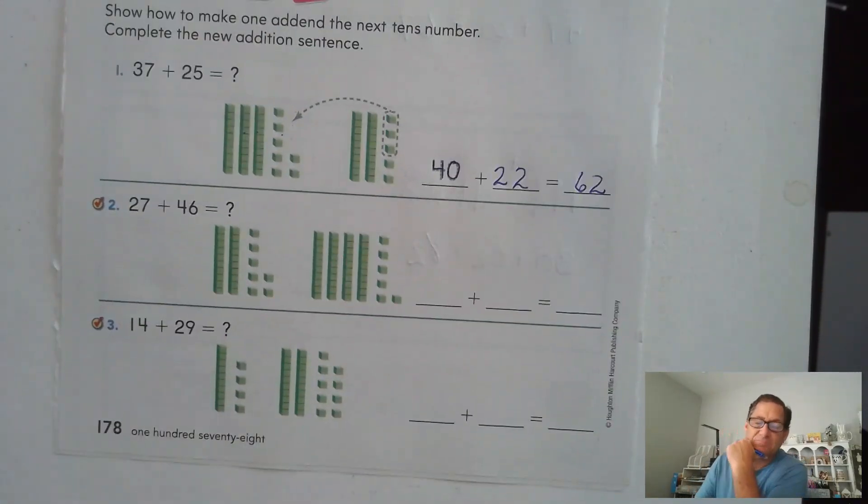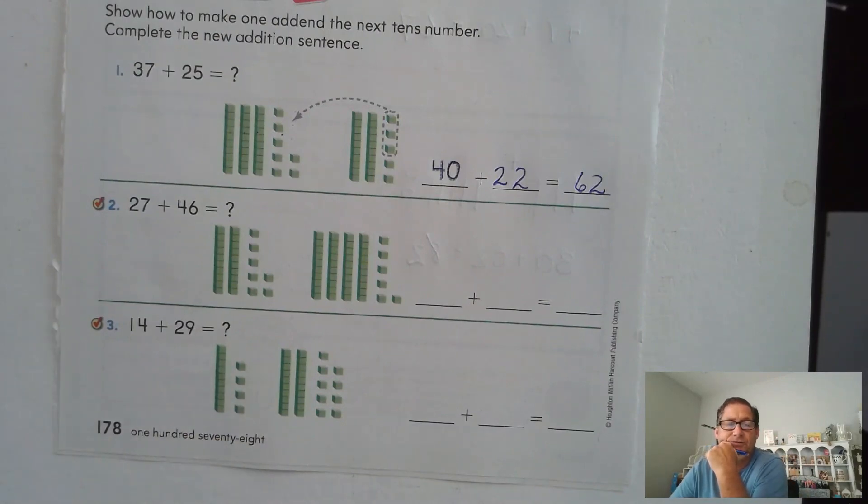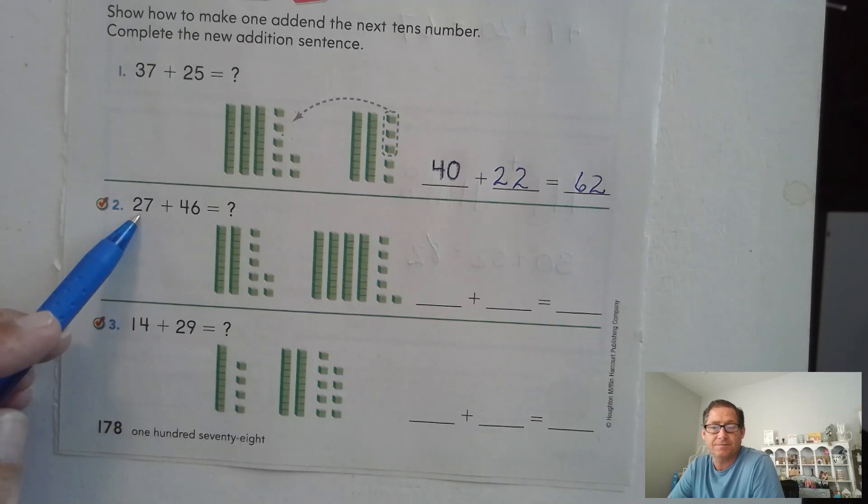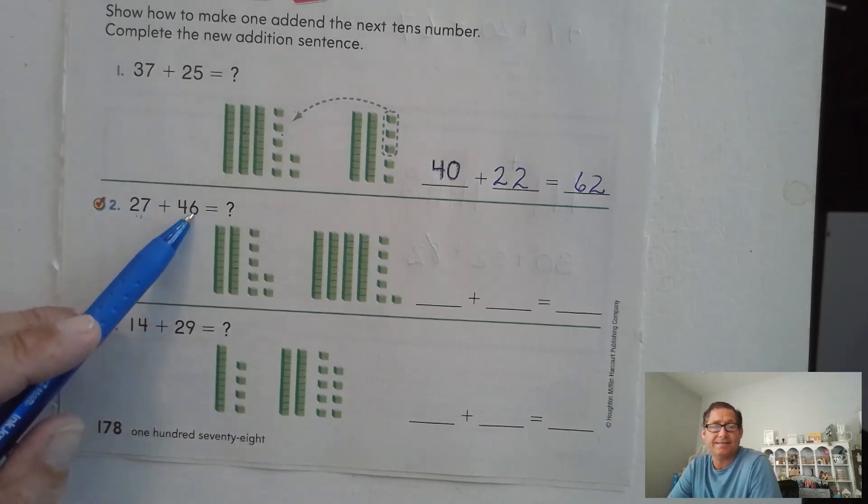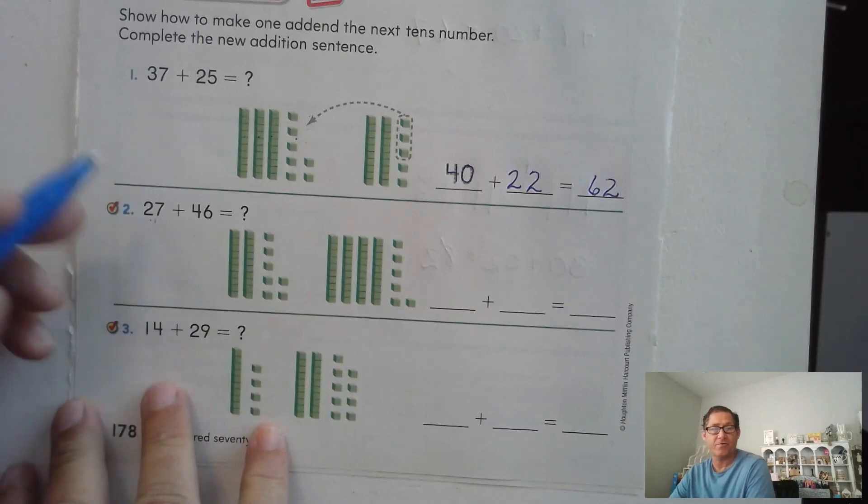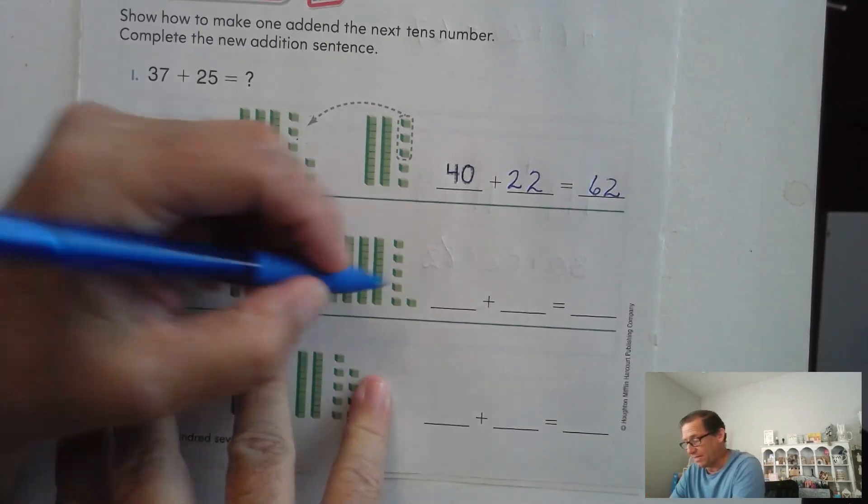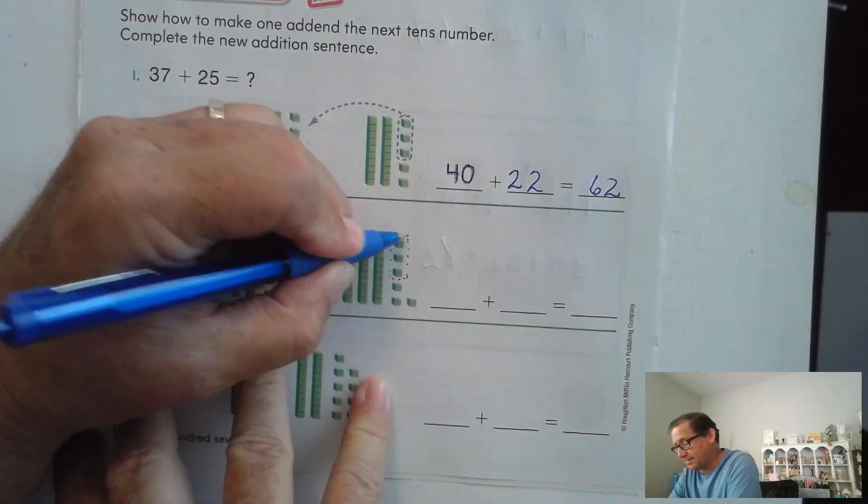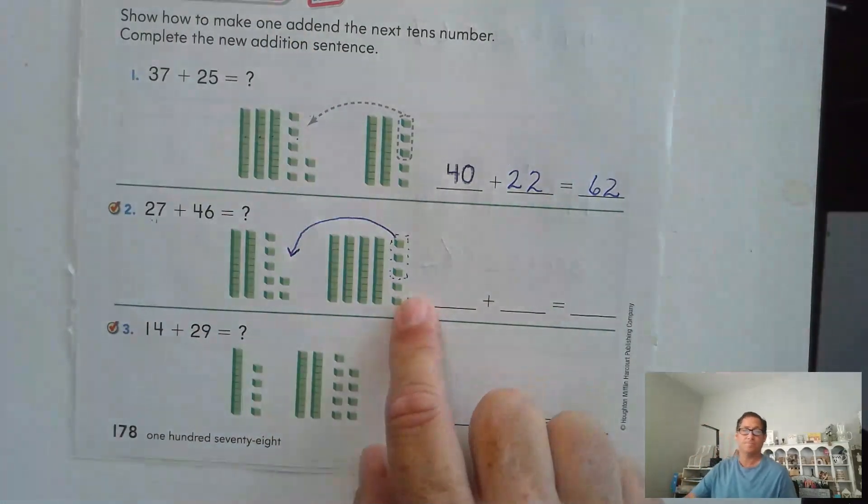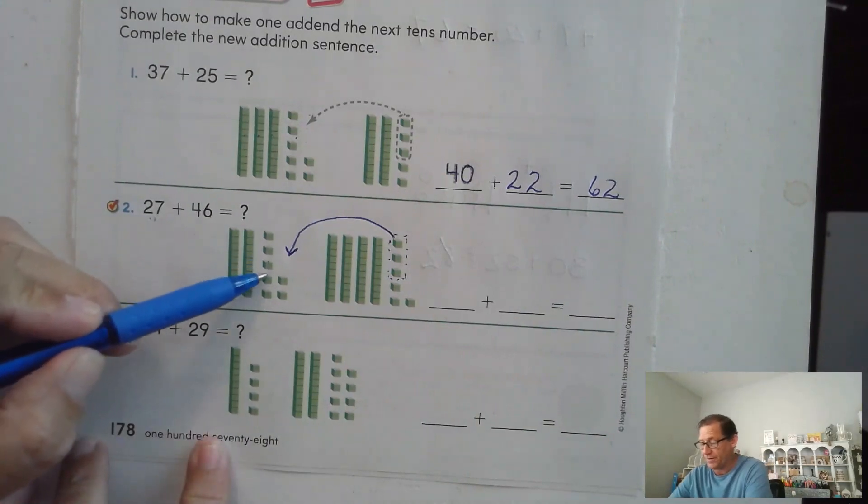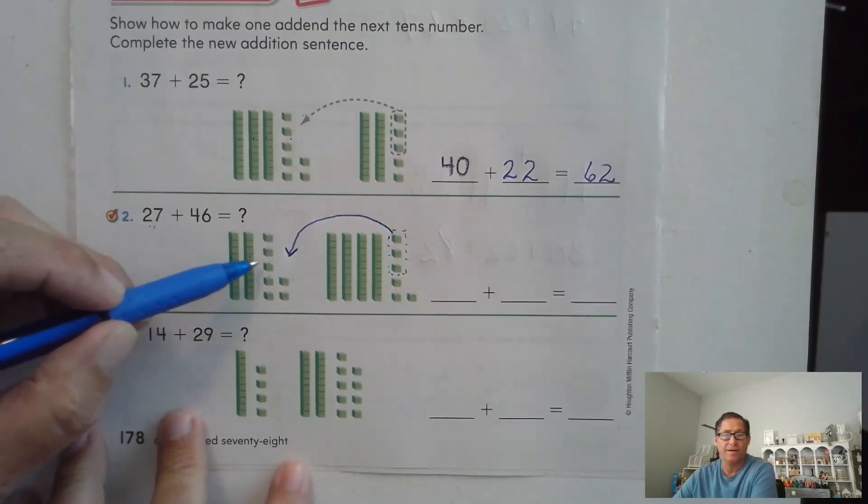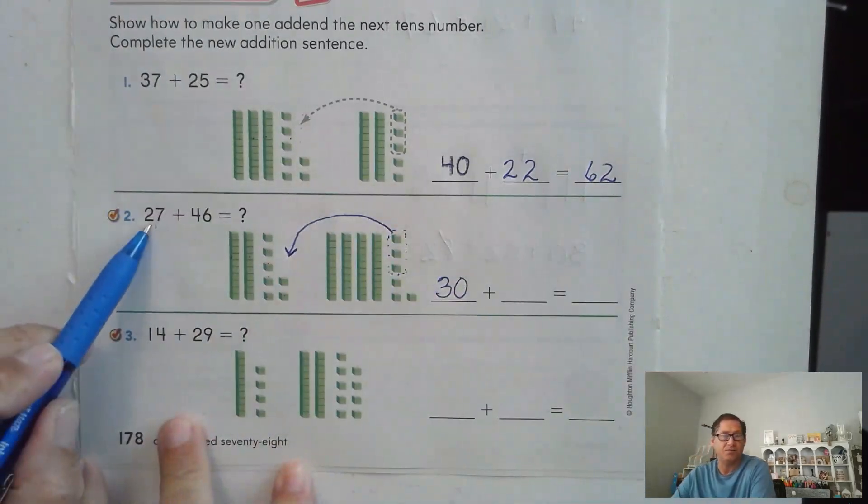27 plus 46. Which addend do you want to turn into a 10? 27, which the next 10 would be 30, or 46, which the next 10 would be 50. It doesn't matter. I'm going to go 27 and make it into the next 30, next 10. So seven plus three. So I'm going to take these three ones from 46, I'm going to put them here. Why am I doing that? Because one, two, three, four, five, six, seven, eight, nine, 10. Now I have another 10. So 10, 20, 30.